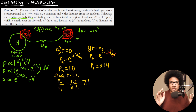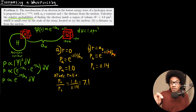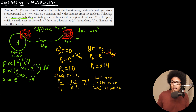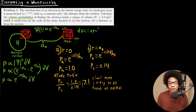So what is this number telling us? This is telling us that the electron is 7.1 times more likely to be located at the nucleus than at a distance a-naught away from the nucleus. You get about a 7 times greater likelihood of that electron being at the nucleus. That's how we interpret this relative probability for A and B.